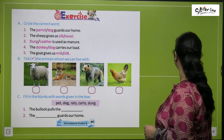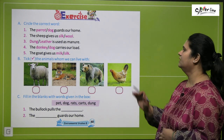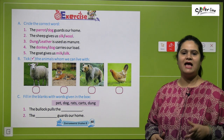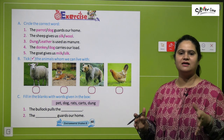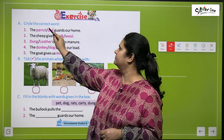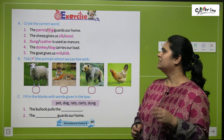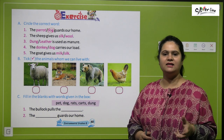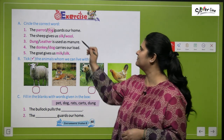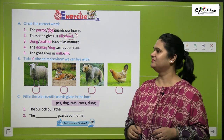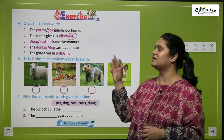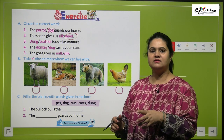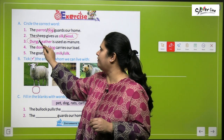Now let's begin with our exercises. Circle the correct word. Number one: which animal guards our home? The answer is dog. Number two: the sheep gives us silk or wool? It gives us wool. Number three: dung or leather is used as manure? The dung of animals — the poop of animals — is used as manure.